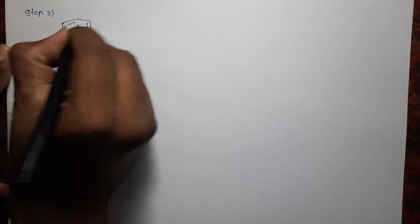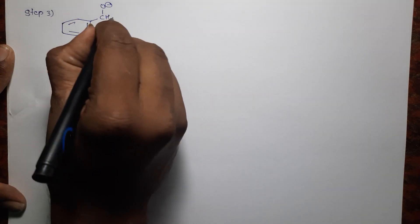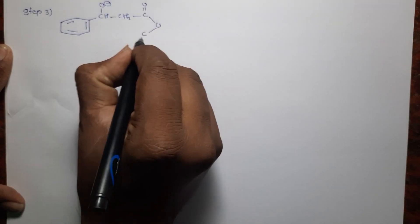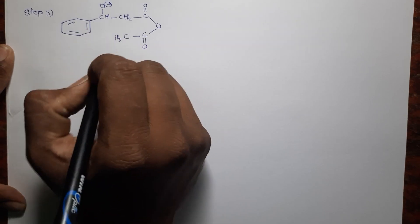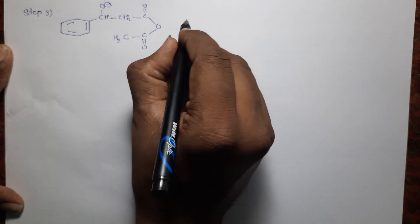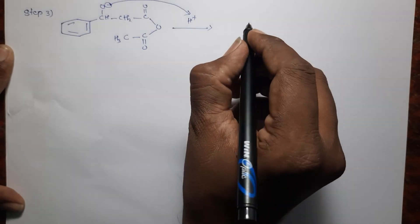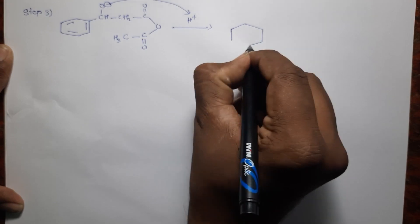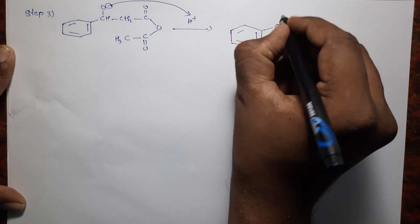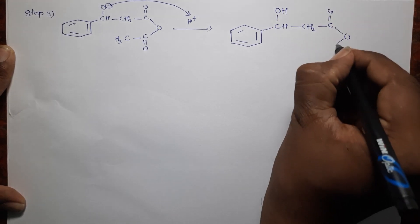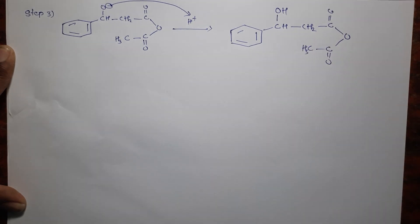In step 3, the negatively charged oxygen abstracts a proton to form an OH group, giving a CH₃ group on the other end. This is the third step.